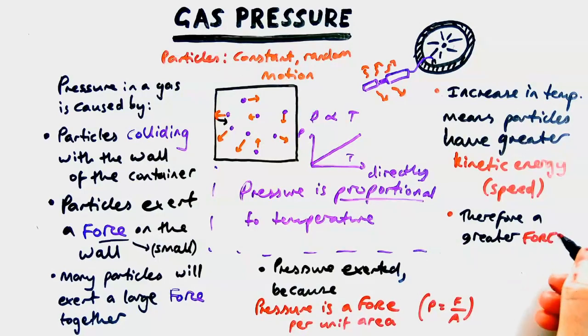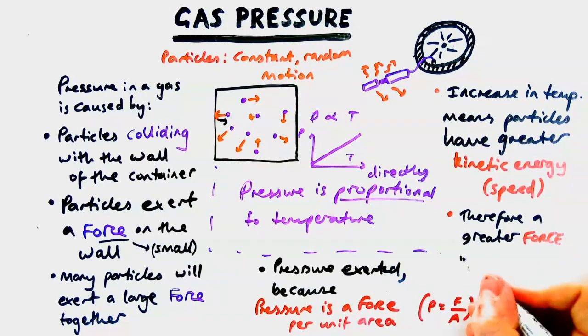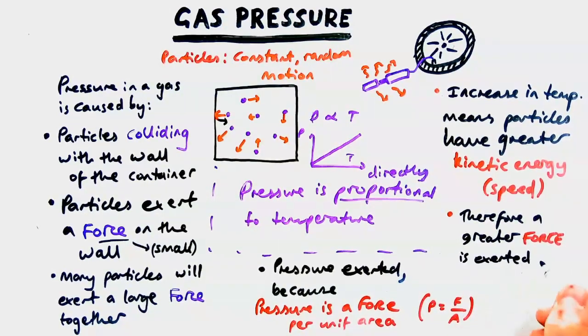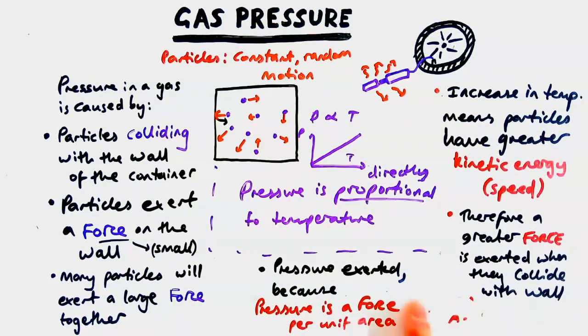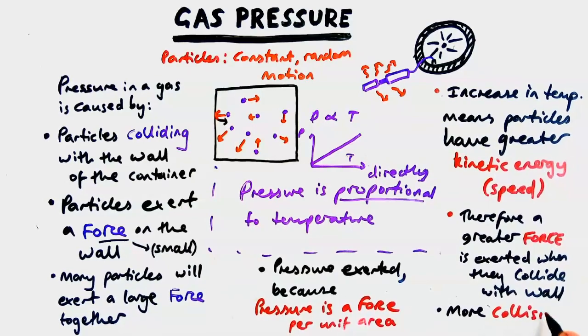So a greater force is exerted when they collide with the wall. Next then let's lead that to pressure. There's also as well as having a greater force there are more collisions per second. So if they're moving faster they're going to be able to go from one side of the tyre to the other more quickly.